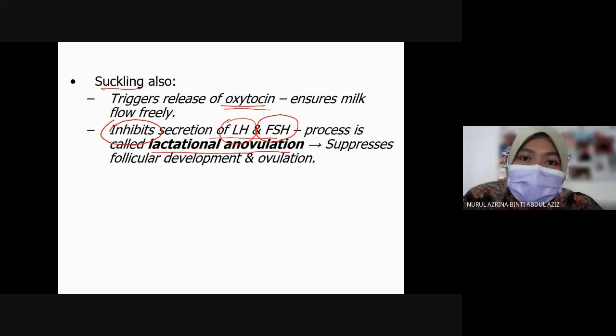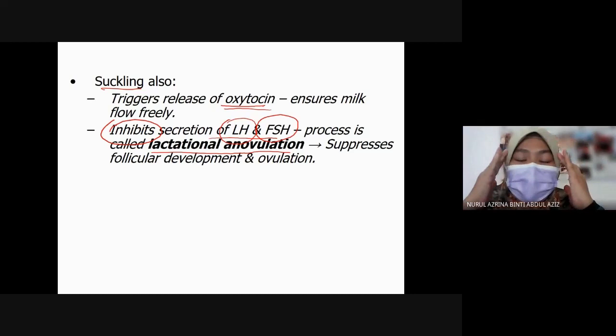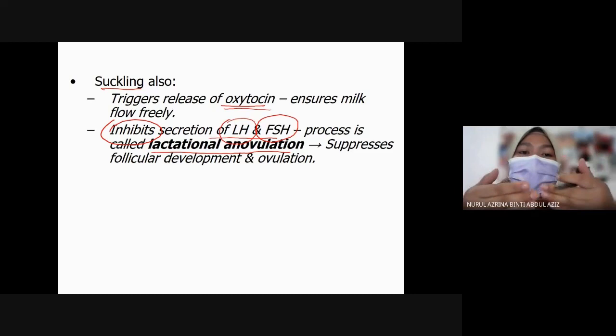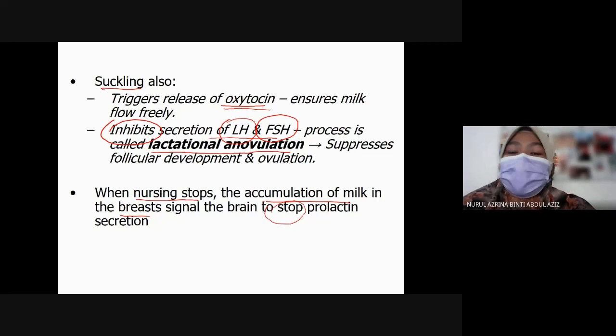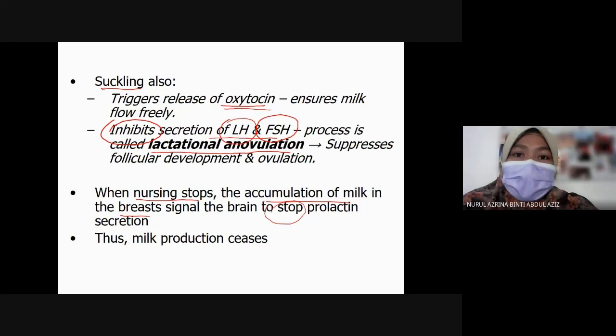That is according to science, but some mothers who breastfeed exclusively can still get pregnant — that is another story. The basic science is that suckling can inhibit secretion of LH and FSH. When nursing stops, accumulation of milk in the breast will signal the brain to stop prolactin secretion, so no more milk will be produced — milk production will cease.